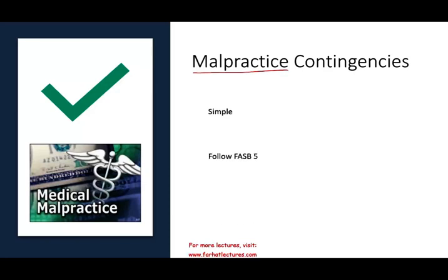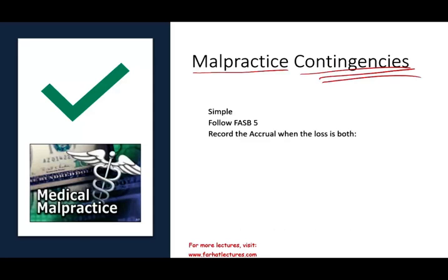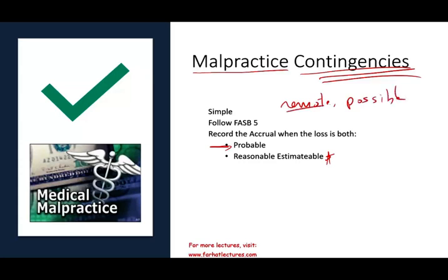The small picture is simple: we have to follow FASB-5. We record a contingency when both of these conditions exist. One, it is probable that we're going to lose. Two, it is reasonably estimable in dollar amount. The probability has to be probable — it cannot be remote, it cannot be possible. For us to record a liability, it has to be probable, meaning there's a good chance we're going to lose, plus we have to know the dollar amount.